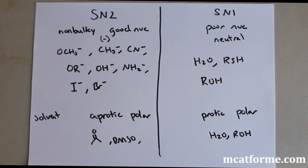Now onto the solvents. For the solvents, for SN2, it's going to be aprotic and polar. SN1 is going to be protic-polar. So what does that mean?